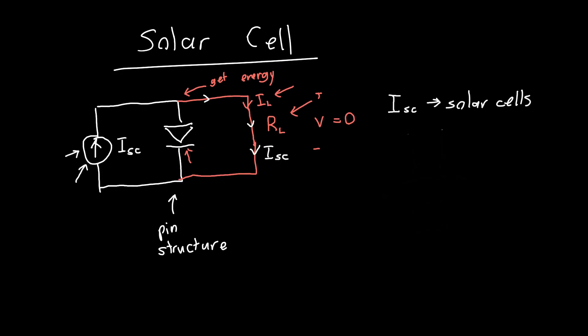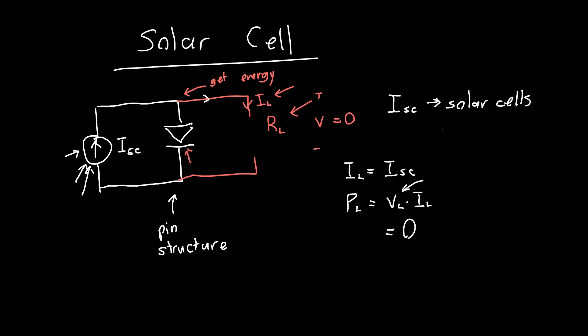When RL is zero — a short circuit — IL is just equal to our short circuit current, which is the current generated from our photons. Unfortunately, the power we're getting out, which is the voltage across the load times the current, is zero, because we've got no voltage across our load. So this isn't a terribly practical configuration.